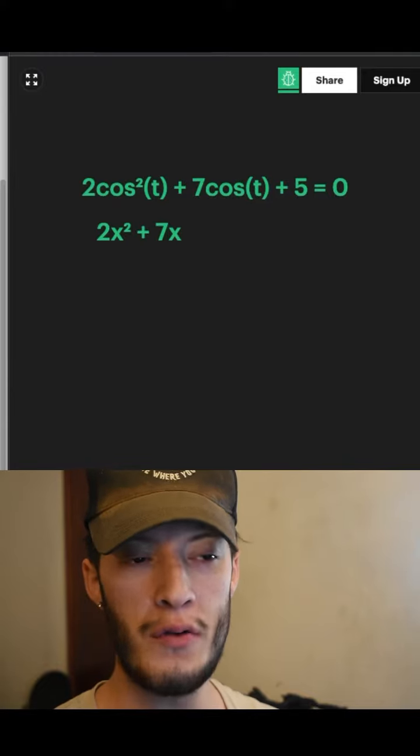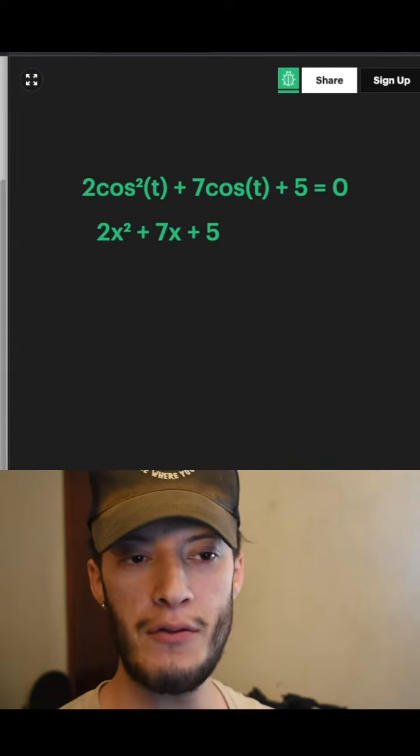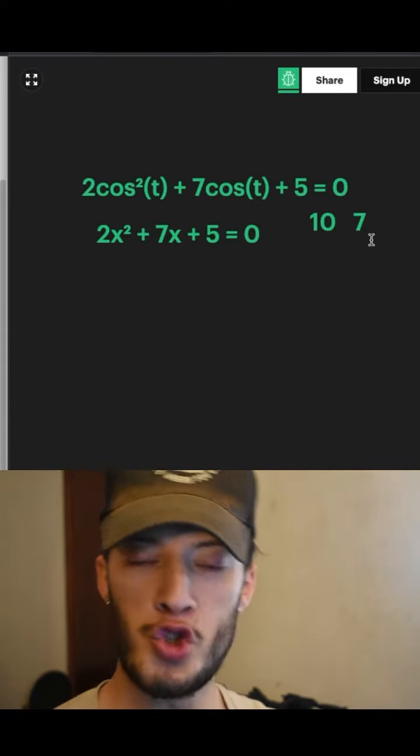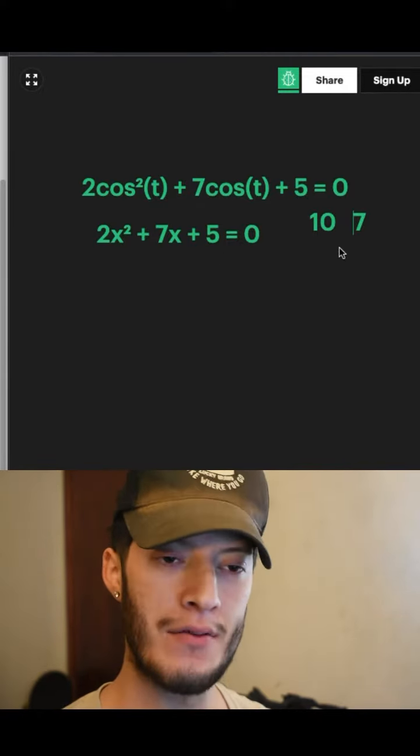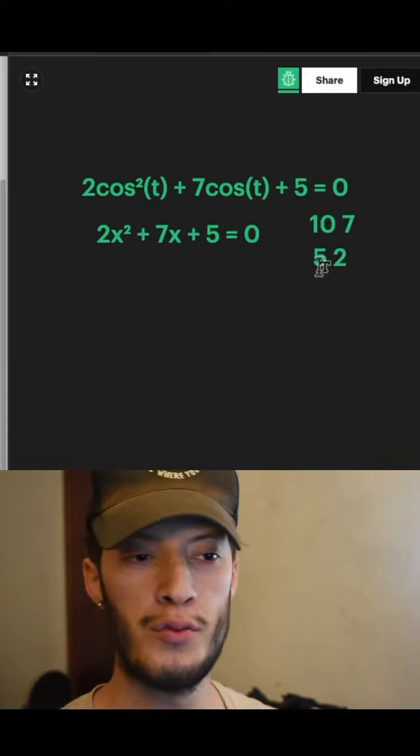And add 7x wherever you see the cosine, and then keep the 5 as is. We need to find two numbers that multiply to 10 and add to 7, and obviously that's 5 and 2. Split them up.